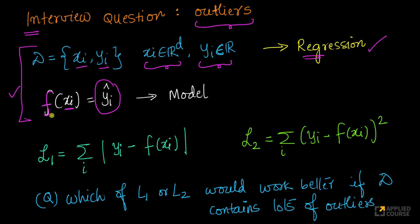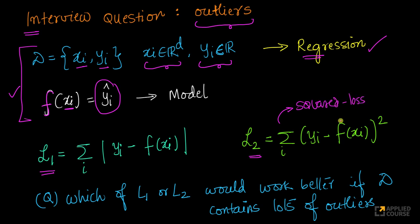While solving this regression problem — using linear regression or a neural network based model — let us say you have two choices. Either you can use L1 loss or L2 loss. L1 is defined as summation over all i of the absolute value of the difference between yi, which is the actual value, and f of xi, which is the predicted value. L2 is summation over all i of yi minus f of xi, whole squared — this is your squared loss in regression.